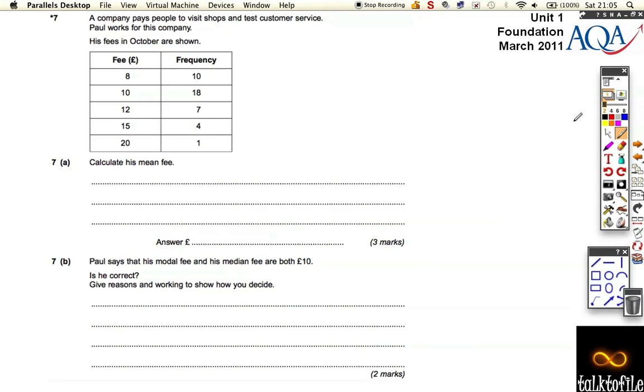Question number 7 on this March 2011 foundation paper for unit 1. It says a company pays people to visit shops and test customer service. Paul works for this company, and his fees are shown in this table here.